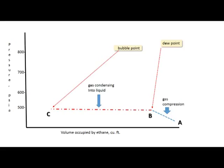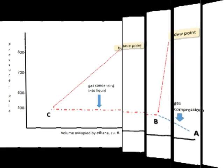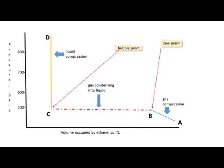C is the bubble point. The bubble point is the last point where any gas exists. Beyond C, only liquid exists. And as you can tell from slide four, it is very difficult to reduce any volume at this point, but as we try, pressure increases rapidly.